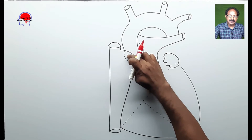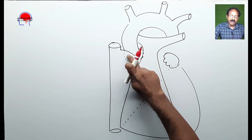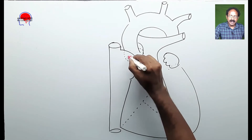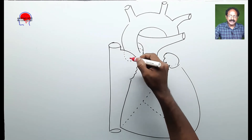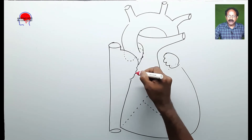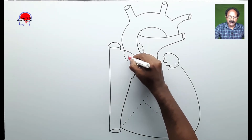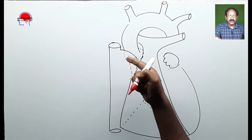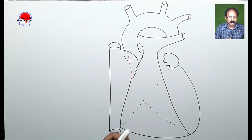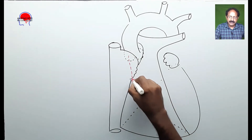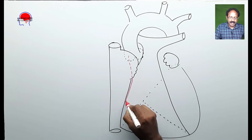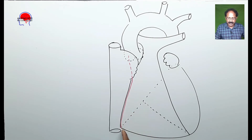The right coronary artery arises from the right aortic sinus. The initial part of the coronary artery cannot be seen — it is hidden by the right auricle. So it arises from there with a hidden course, which is why we draw it with a dotted line. Then it emerges and we can see the coronary artery running through the coronary sulcus.